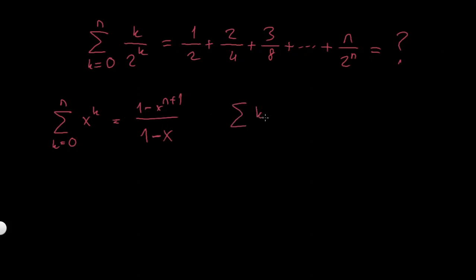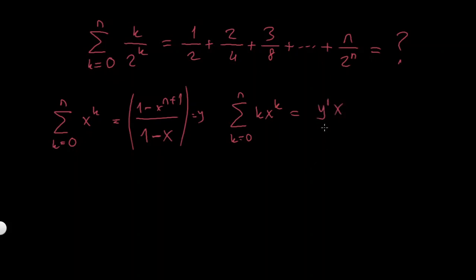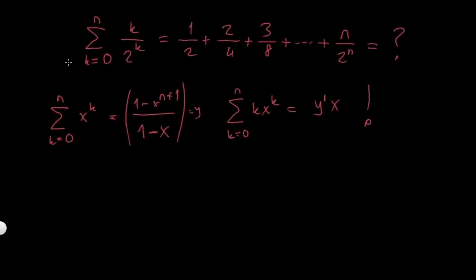Differentiating gives k times x to the k minus 1, and if I multiply both sides by x I get the left-hand side I need. Imagine this thing is y, so my expression is y prime times x. You can solve it this way, but there's nothing interesting about it, so I'm not going to do it.